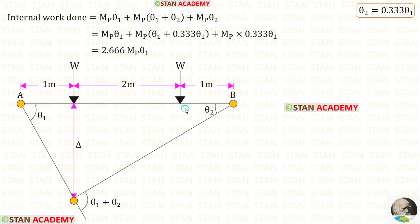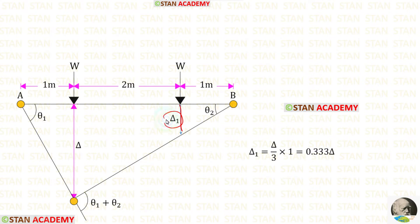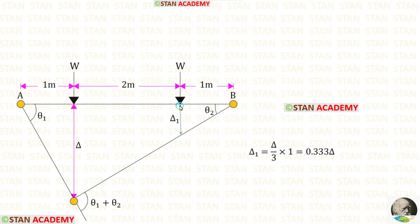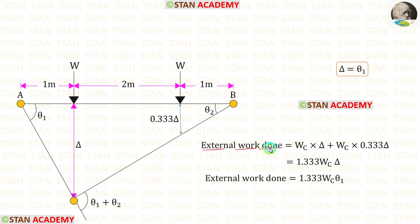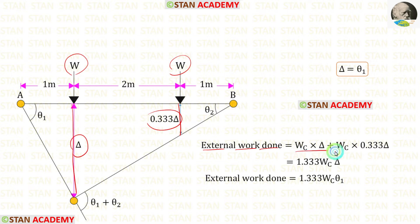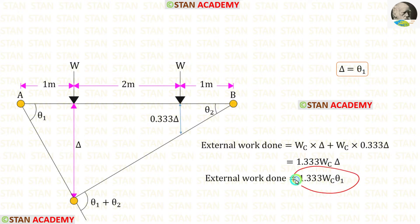Now we are going to find the external work done. We need to find the height under this load — let us call it delta1. At a distance of 3 meters, the height is delta, so for 3 it is delta. But we need the height at a distance of 1 meter. Multiplying accordingly, we get delta1 equal to 0.333 delta. So we multiply this load with height delta and this load with height 0.333 delta, then add them. Substituting delta as theta1, this is the external work done.